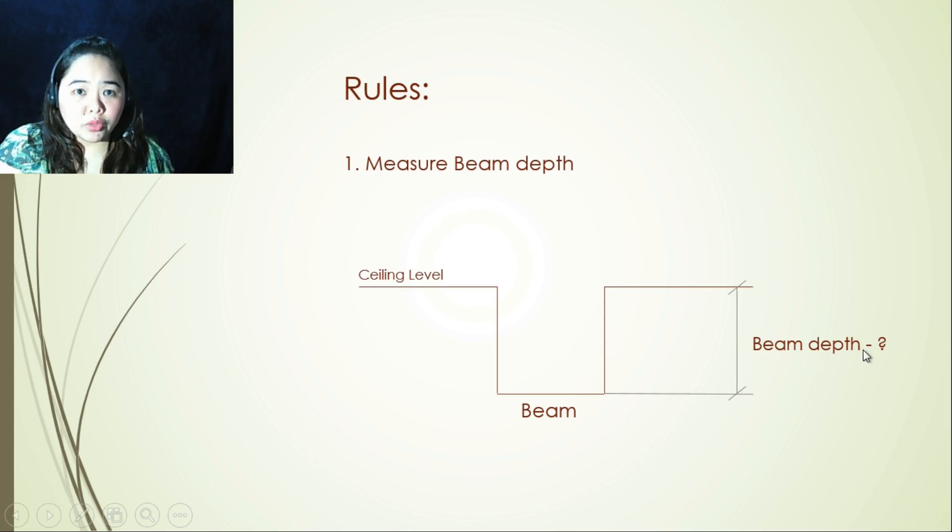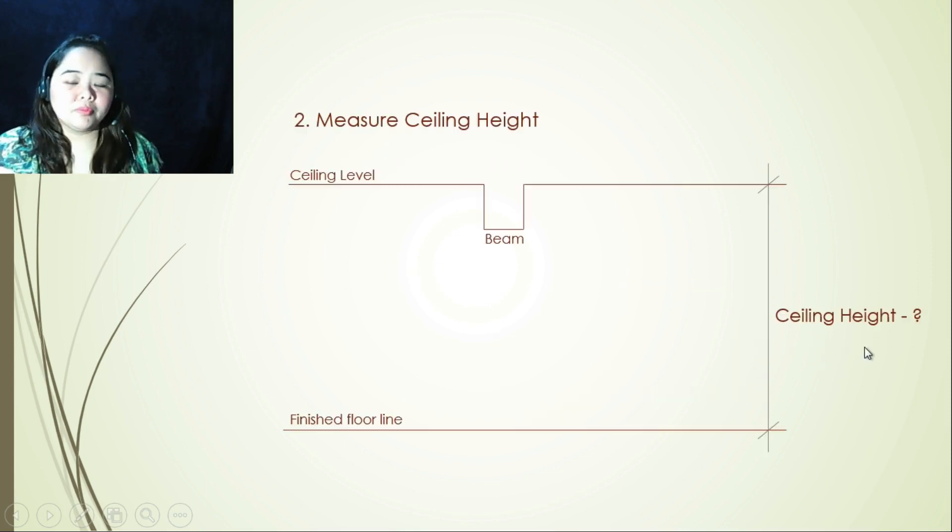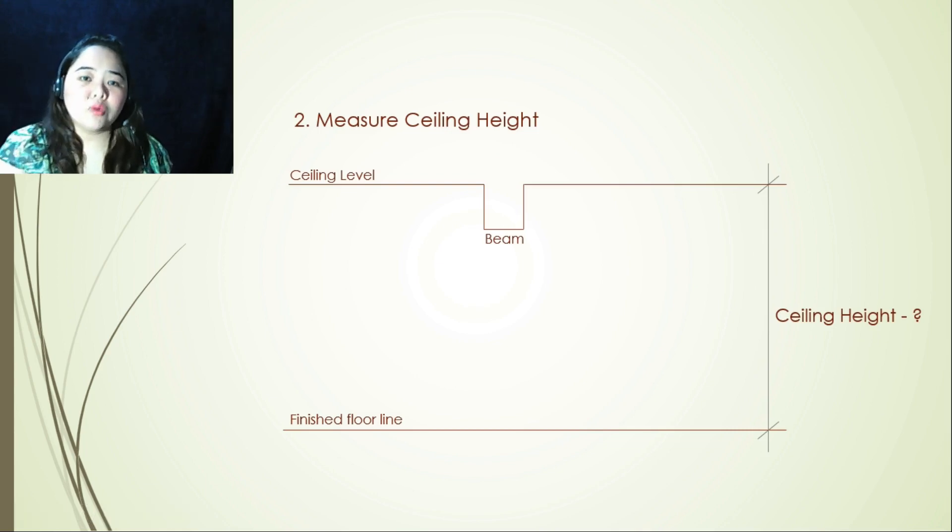So second rule, we need to measure ceiling height. So ceiling height is your ceiling underside and finished floor line.